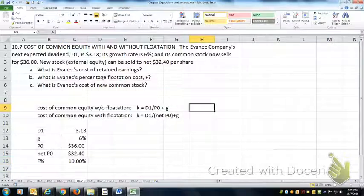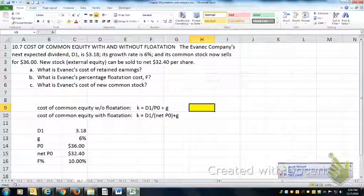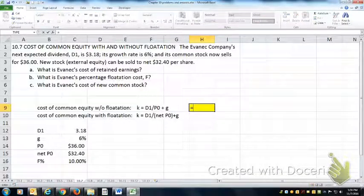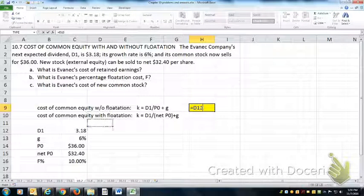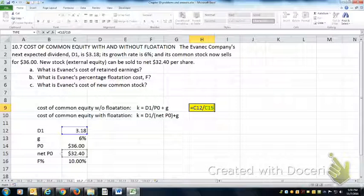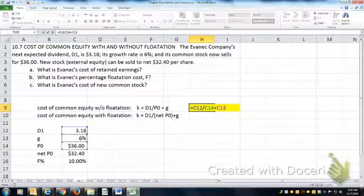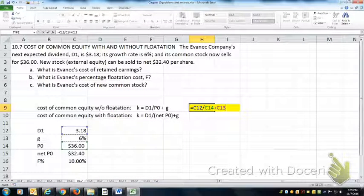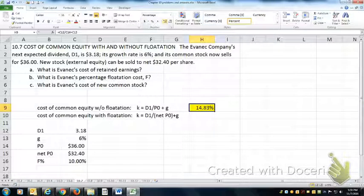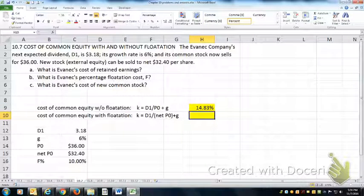Given the numbers we have here, the cost of equity without flotation would be D1 over P0 plus G: 3.18 over 36 plus 6%, or 14.83%.